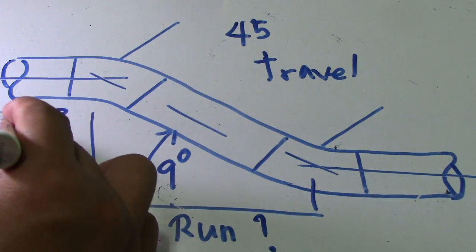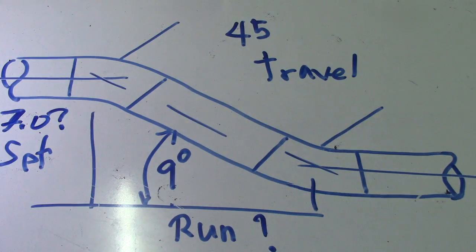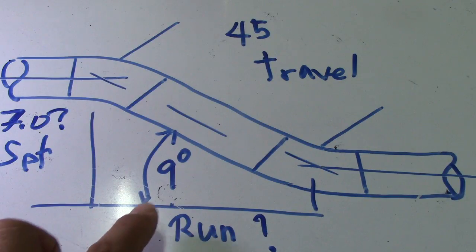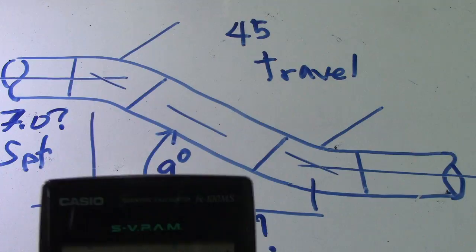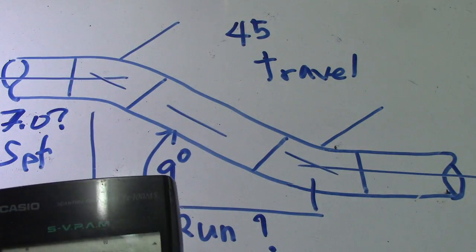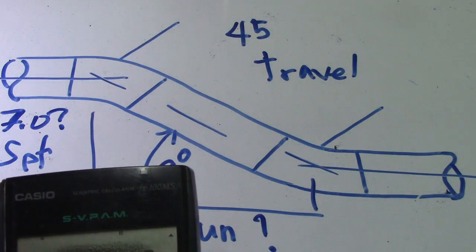That is the answer for the set: 7.07. Next is run. We will compute the run. To find that, use travel again, but multiply it by cosine instead of sine.